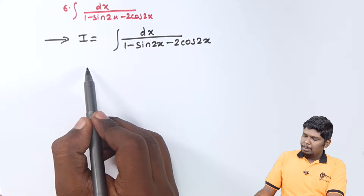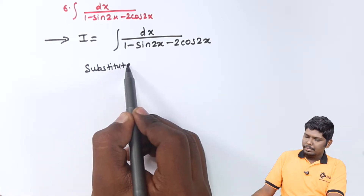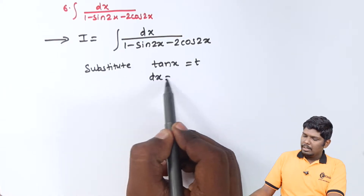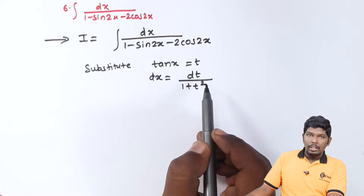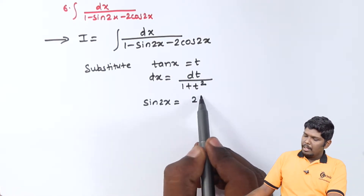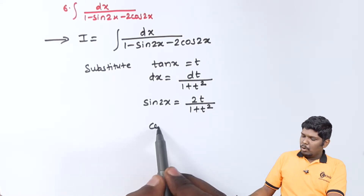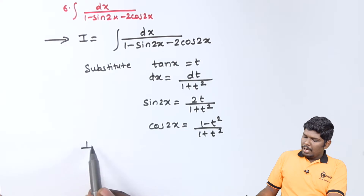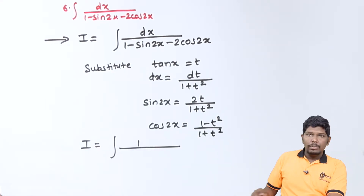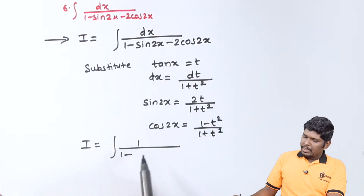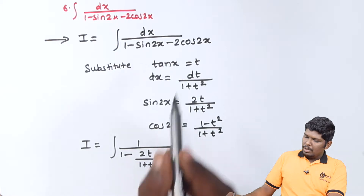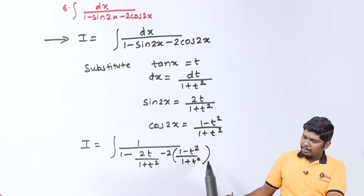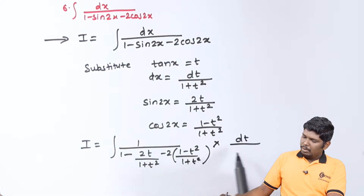For that, we know that the substitution is tan x = t. For that, the value of dx is dt upon (1 + t²). The value of sin2x is 2t upon (1 + t²) and the value of cos2x is (1 minus t²) upon (1 + t²). Now I will be 1 upon [1 minus (2t/(1+t²)) minus 2·((1−t²)/(1+t²))] into dt upon (1 + t²).